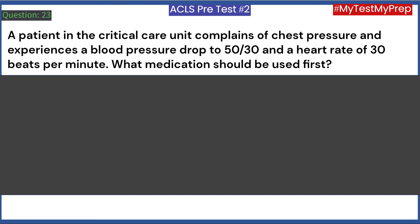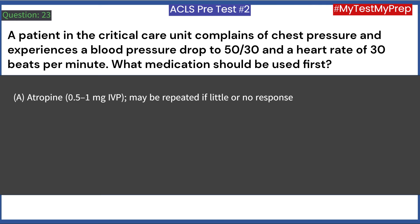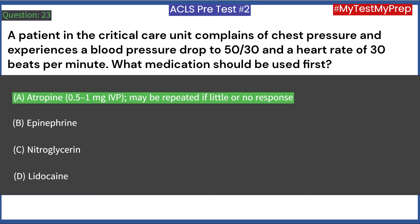A patient in the critical care unit complains of chest pressure and experiences a blood pressure drop to 50/30 and a heart rate of 30 beats per minute. What medication should be used first? A. Atropine 0.5 to 1 mg IVP, may be repeated if little or no response. B. Epinephrine. C. Nitroglycerin. D. Lidocaine. Answer: A. Atropine 0.5 to 1 mg IVP, may be repeated if little or no response.